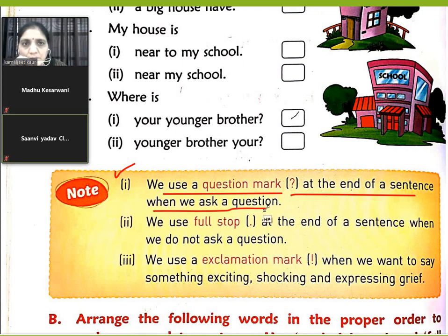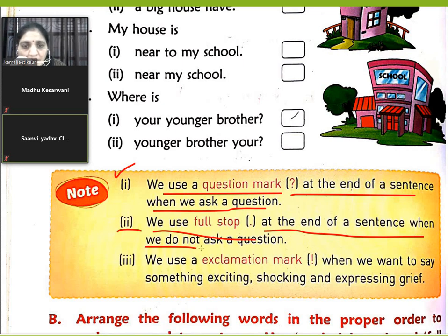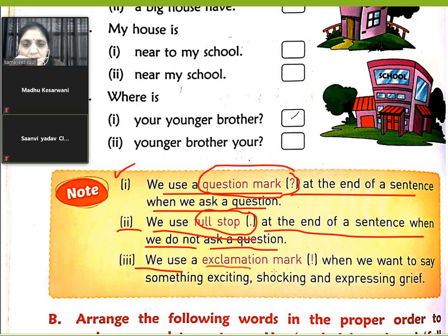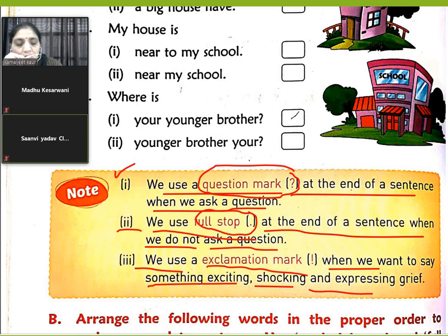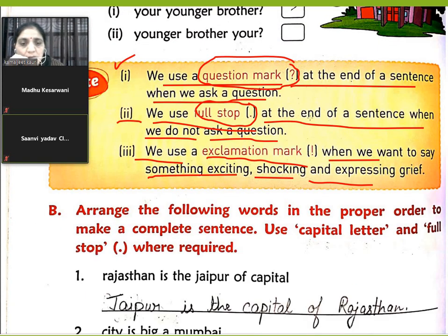When we ask a question, we put a question mark at the end of the sentence. When we do not ask a question, we put a full stop. For a simple sentence, we use a full stop. We use an exclamation mark when we want to say something exciting, something shocking, some shocking news, or expressing grief.